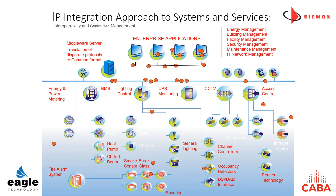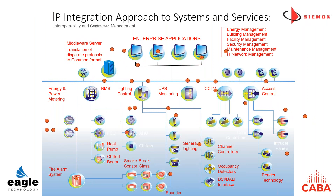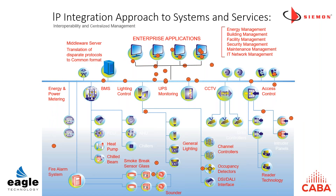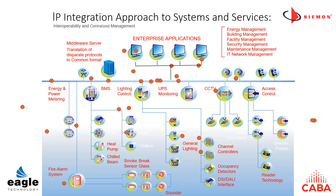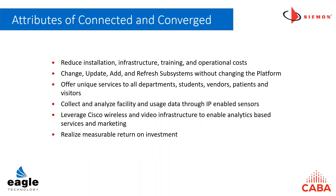When we do that, our networks look like a single unified IP infrastructure based on structured cabling, and the dots of information are now going everywhere. The BAS represents that integration platform, but the information is being shared with all the different systems within that building. This gives us a single converged IT network. At an economy of scale, it's a less costly infrastructure than our traditional line voltage — in a lot of cases, we're eliminating two different types of infrastructures.